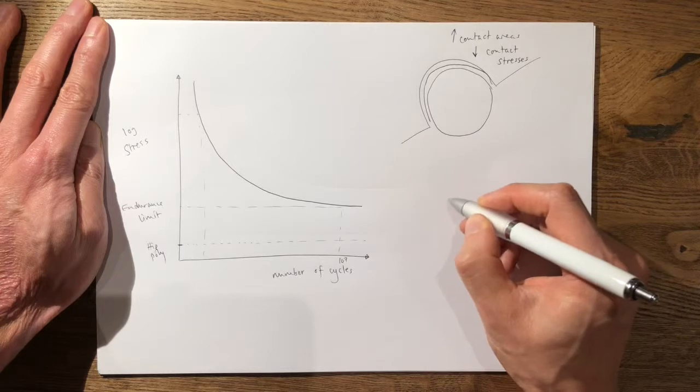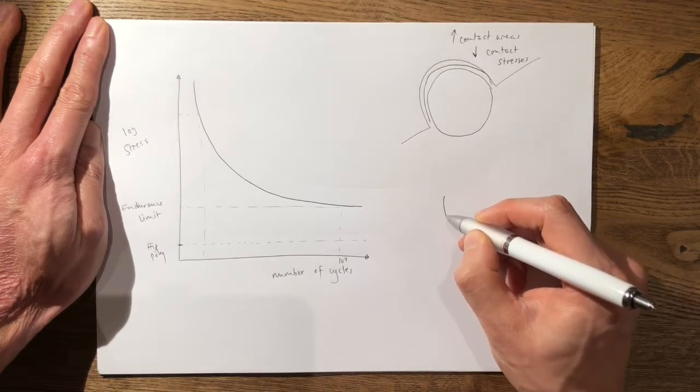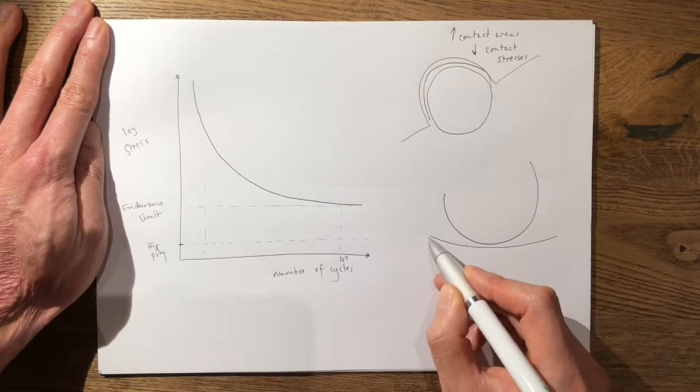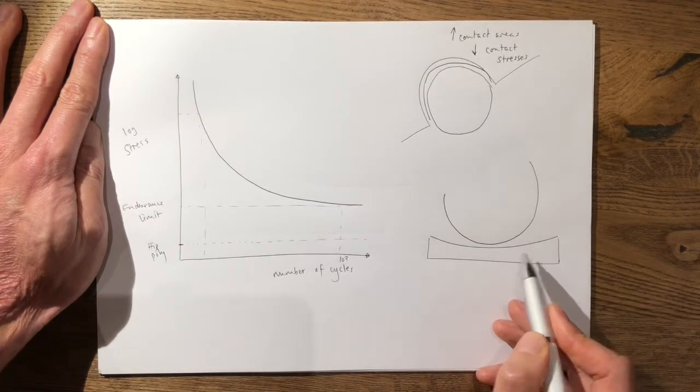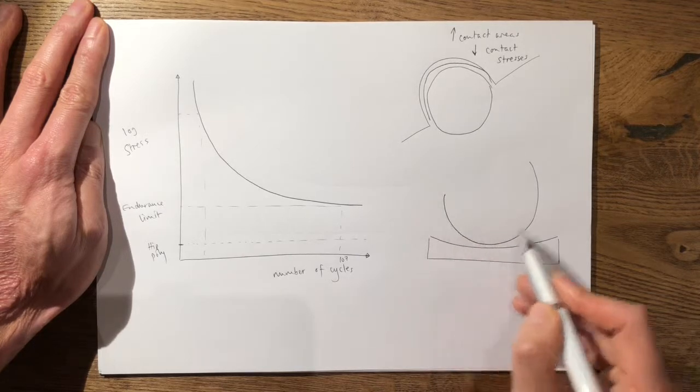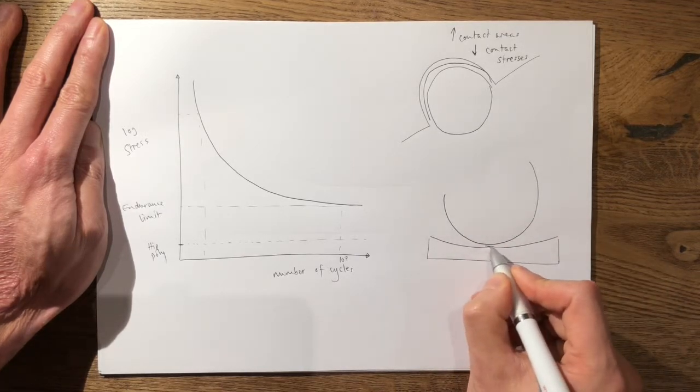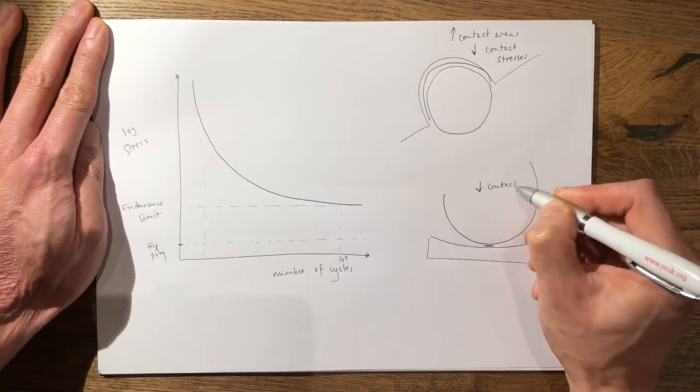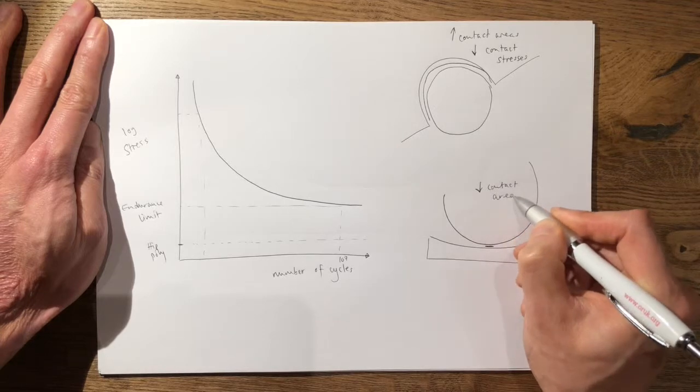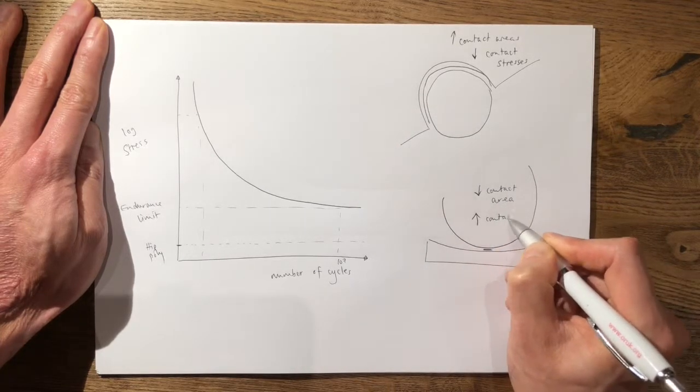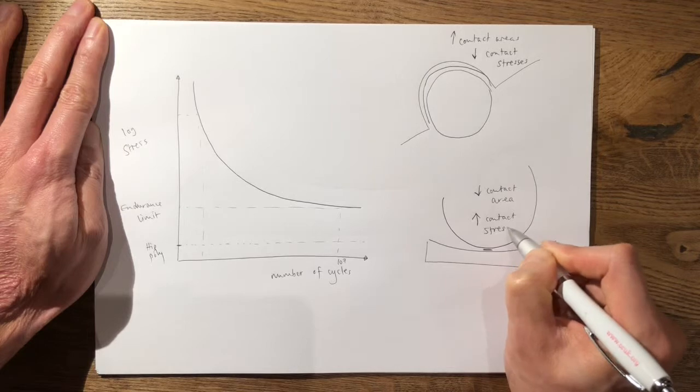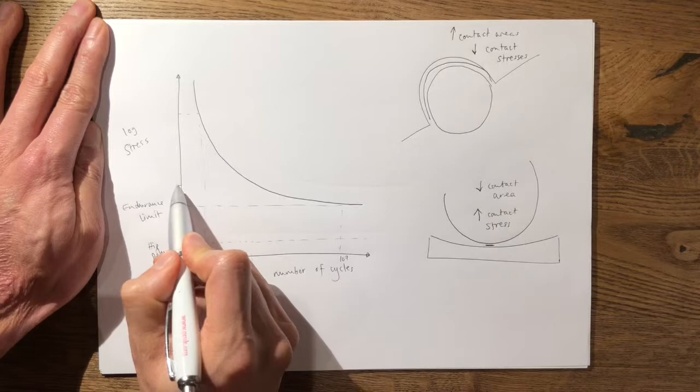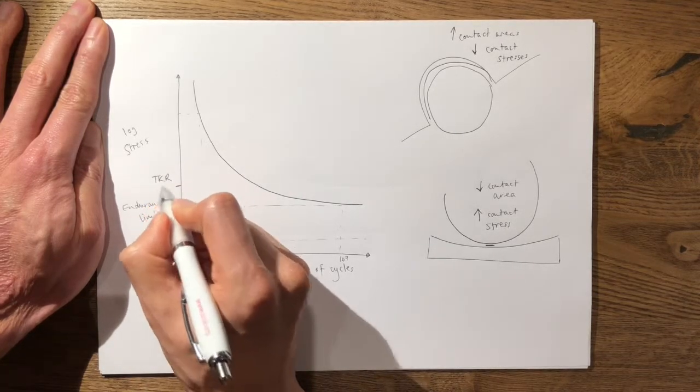Conversely in a knee replacement you have almost like a round on flat design. So if this is your tibial polyethylene tray and this is your femoral condyle, you have an environment where you have very low contact area and therefore very high contact stresses. So this polyethylene insert will be operating somewhere up here. So this is your total knee replacement poly.